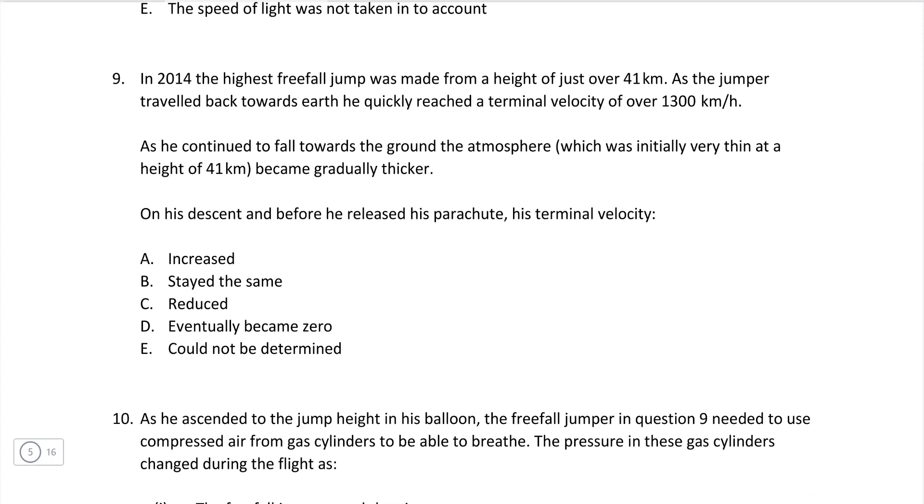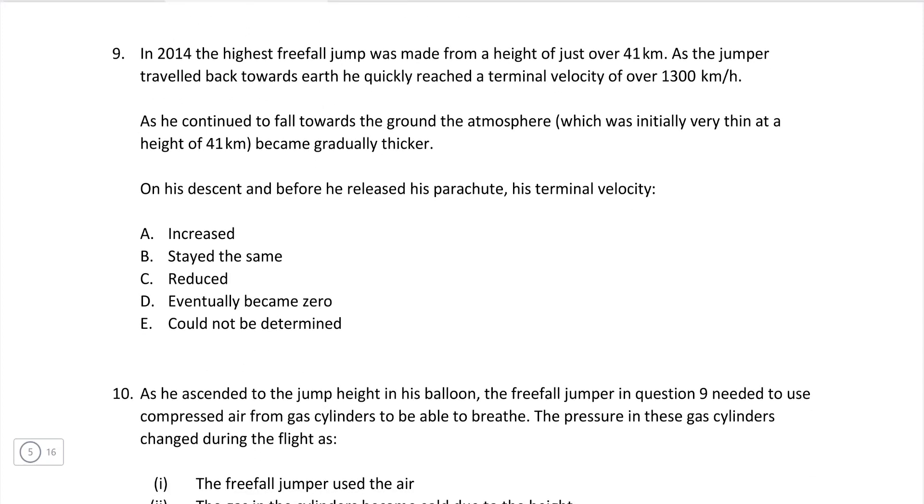Question 9. In 2014, the highest freefall jump was made from a height of just over 41 kilometers. As the jumper traveled back towards Earth, he reached a terminal velocity of 1,300 kilometers per hour. So he continues to force towards the ground for the atmosphere, and becomes thicker on his descent. And before he released his parachute, what happened to his terminal velocity? Well, if the drag force keeps increasing as he's falling through the atmosphere, the terminal velocity will become smaller and smaller. So it peaks at 1,300 and then is going to go down and down. If you do a normal skydive from 5,000 meters or so, the terminal speed I think is around 120 miles an hour. So that's substantially lower. So the correct answer is C.